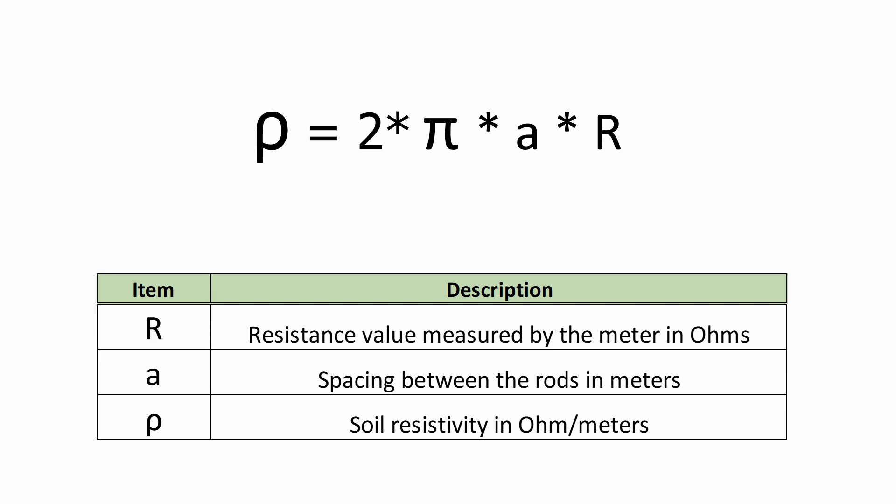Where R is the resistance value measured by the meter in ohms and A is the spacing between the rods, measured in meters. The soil resistivity is measured in ohm meters.